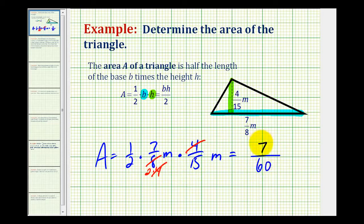So the area is seven-sixtieths, and the units for area are units squared, so in this case we have meters squared. That's why I left the units in here. We can see that meters times meters would be meters squared.